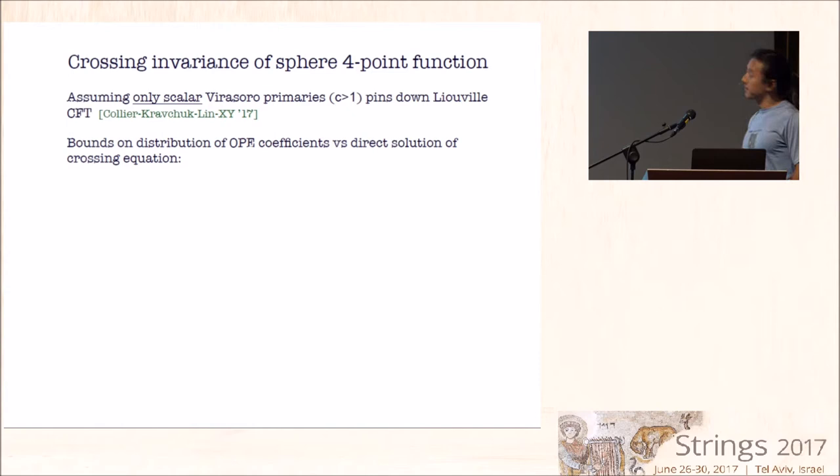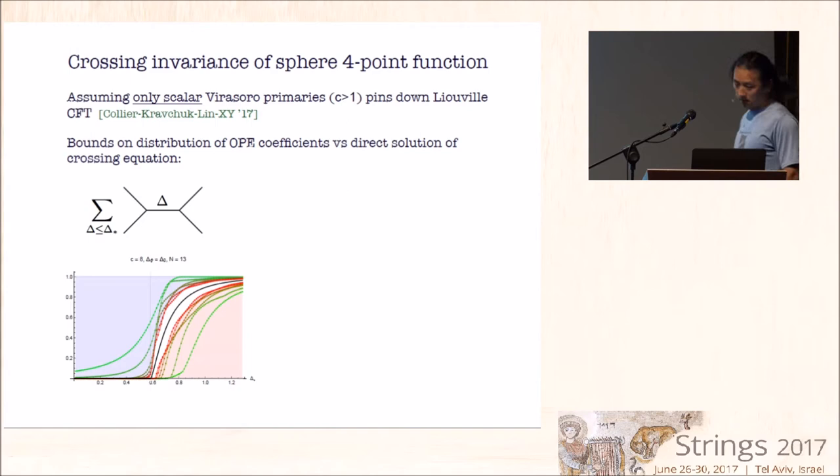The way it works is that we just analyze the associativity of OPE from the crossing equation, and we try to put constraints on what we call the spectral function - you take the four-point function but truncate the dimension up to some delta star, and you try to bound that as a function of delta star. So it turns out that you can put these lines here as upper bounds, these are lower bounds on the spectral function, which reflects the distribution of OPE coefficients across all dimensions. As you improve the numerical sophistication, they tend to narrow down to a small window and converge to this black line here, which is actually the Liouville spectral function computed from the DOZZ formula for the structure constants integrated with Virasoro conformal blocks.